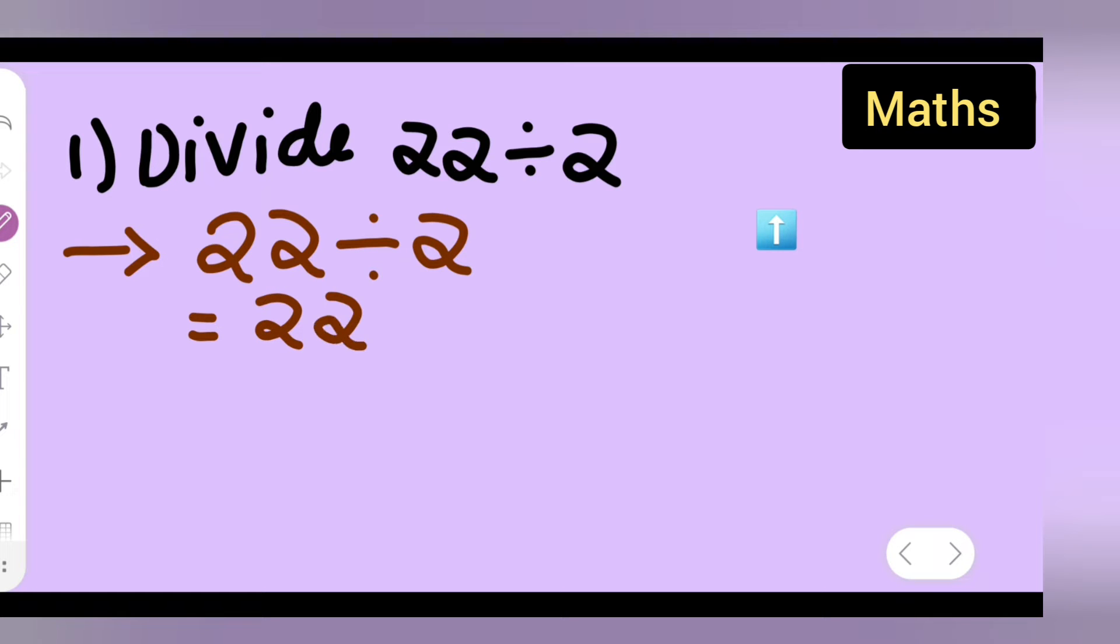So, 22 - how are you going to divide it by 2? Multiply it with the reciprocal of 2, that is 1 by 2. Okay, first what do you have to do? To divide 22 by 2, write 22 multiplied by the reciprocal of 2.